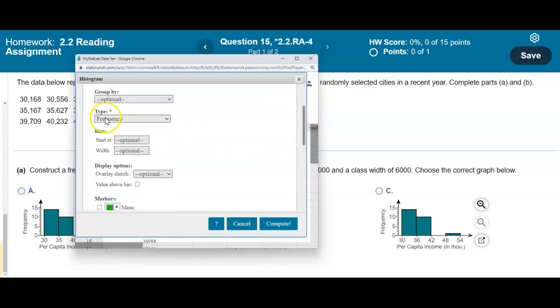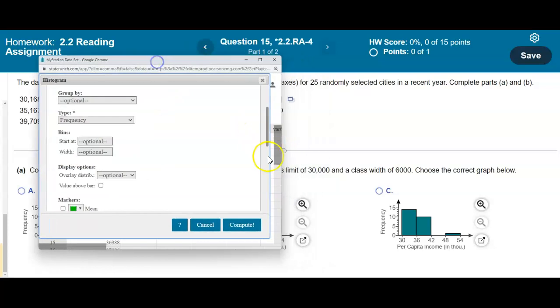Because we want to create a frequency histogram, we want to make sure it's the frequency histogram. Now, again, it's telling us that the lower class limit is $30,000. So in the bin section, we're going to start at $30,000. And then the width is $6,000. And then we're going to go ahead and select value above bar.